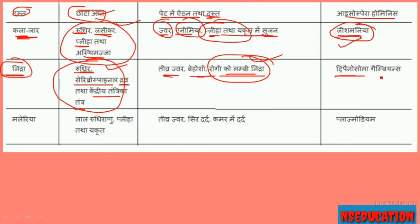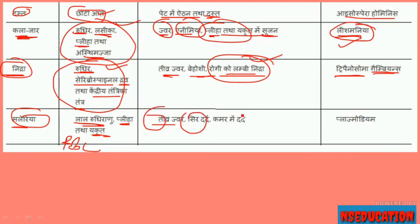So Trypanosoma gambiense — Trypanosoma gambiense. And after this, next is malaria. Malaria causes pain in the waist and lower back. This disease is caused by Plasmodium — Plasmodium, a protozoan. So friends, these were all the important ones.